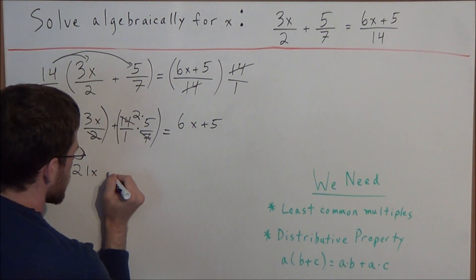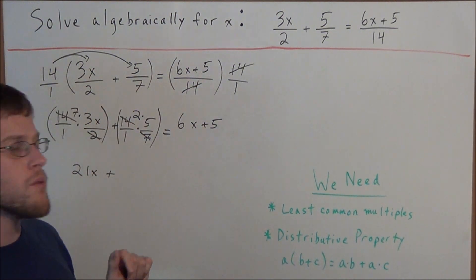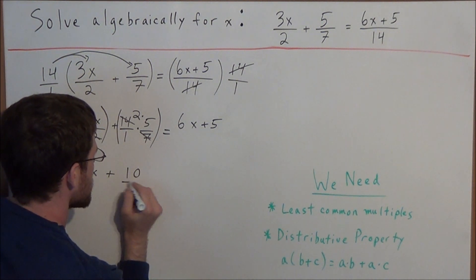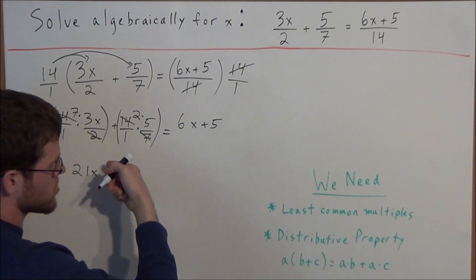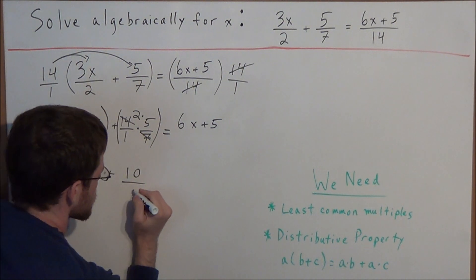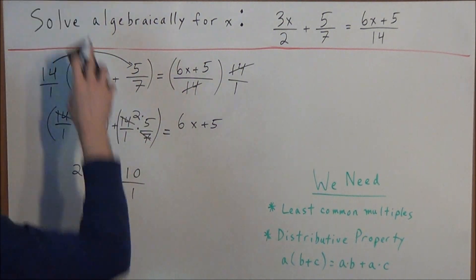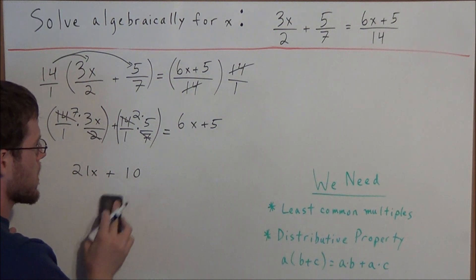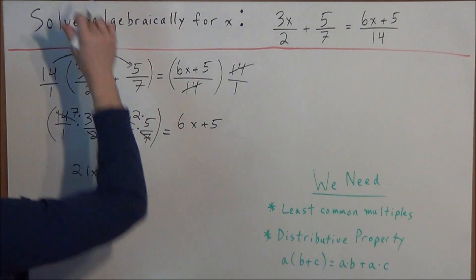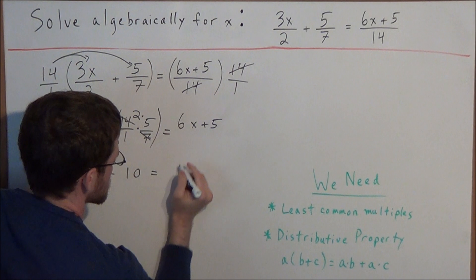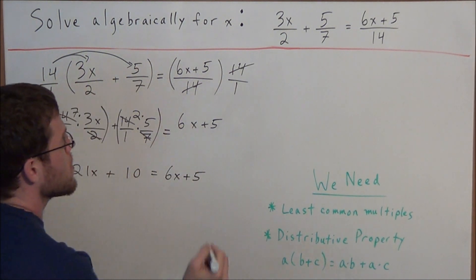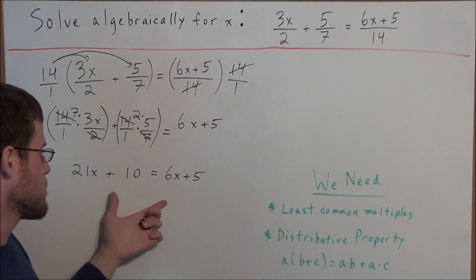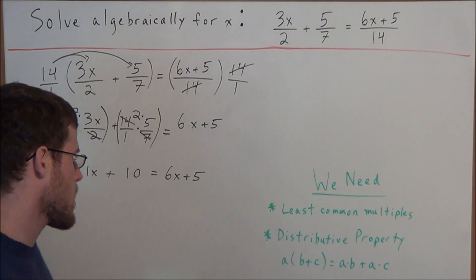For the second piece, in the numerator we have 2 times 5 which is 10, and in the denominator all that's left is 1, so we have 10 over 1 — which simplifies to just 10. So now we have 21x plus 10 equals 6x plus 5. Notice how all of the denominators are gone, and now we have a simple algebraic equation to solve.